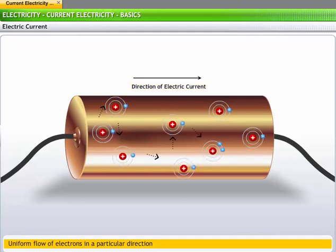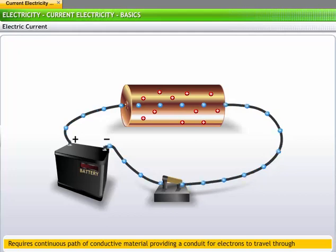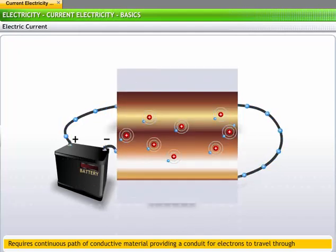The direction of electric current is the same as the direction of flow of electrons. Electric current requires a continuous path of conductive material to provide a conduit for electrons to travel through. Electrons move in the empty spaces within and between the atoms of a conductor. As each electron moves uniformly through a conductor, it pushes the one ahead of it. Thus, all the electrons move together as a group.